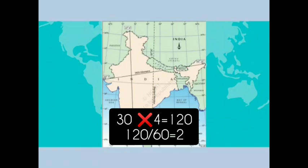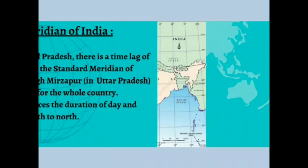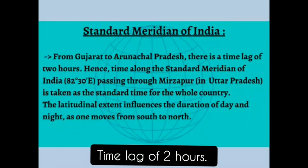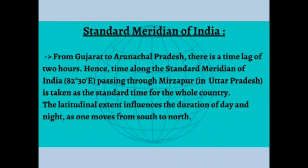The distance between Gujarat and Arunachal Pradesh spans about 30 longitudes, and the distance between two longitudes equals four minutes. So 30 longitudes multiplied by 4 gives 120, and dividing by 60 gives 2 — meaning there is a time lag of about 2 hours from Gujarat to Arunachal Pradesh. Therefore, the time along the standard meridian of India — 82 degrees 30 minutes East, passing through Mirzapur in Uttar Pradesh — is taken as the standard time for the whole country.